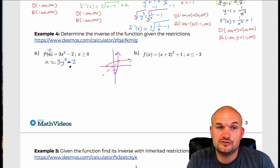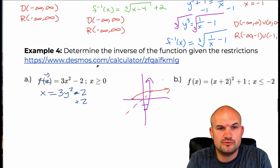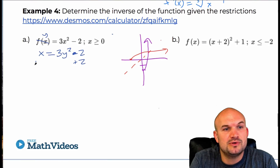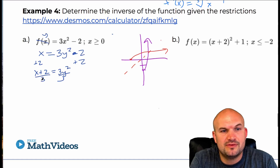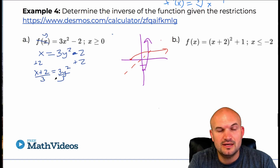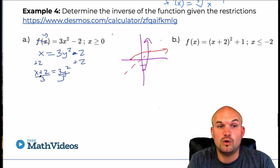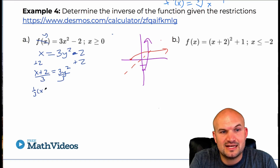Now to solve for y, I'll use the inverse operation. I'll add 2 on both sides, so I have x plus 2 equals 3y squared. Then divide by 3 on both sides — I prefer to write this as one-third in front. So I can rewrite this as one-third times x plus 2.